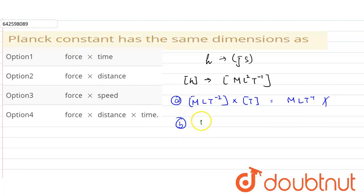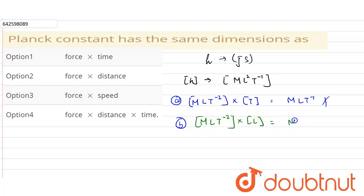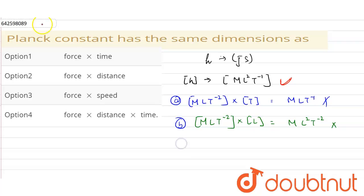Checking the second option: force into displacement. The dimension of force is MLT⁻², and multiplying by displacement L gives ML²T⁻². This does not match ML²T⁻¹, so the second option is also wrong.